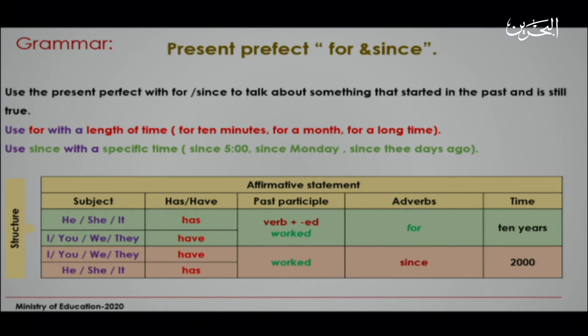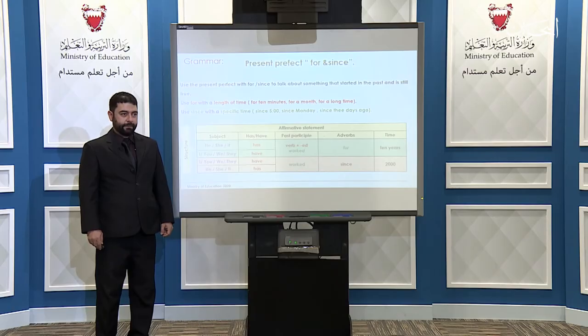Let me try the first one. You have he, she, or it — you choose only one. For example, 'he has.' Then you have the formula: verb plus -ed. For example, 'worked.' So: He has worked — adverb — for 10 years. Full stop.